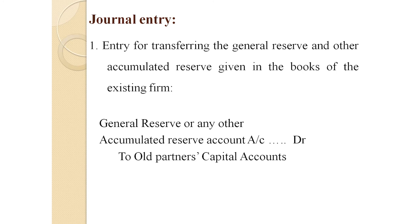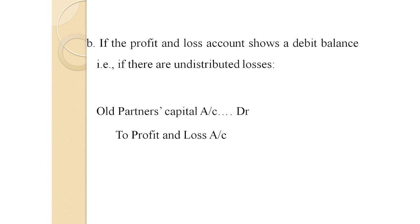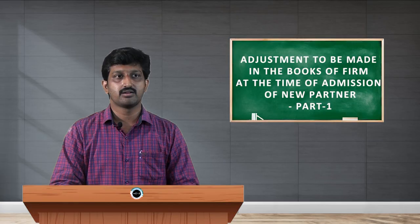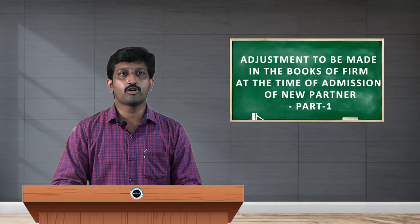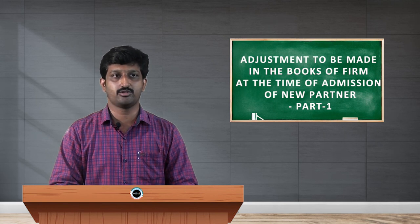The journal entries are as follows. First entry for transferring the general reserve and other accumulated reserves: General Reserve or any other accumulated reserve Account Dr. to Old Partners' Capital Account. Second entry for transferring the profit and loss account balance: if the profit and loss account shows a credit balance (undistributed profits), then Profit and Loss Account Dr. to Old Partners' Capital Account. If the profit and loss account shows a debit balance (undistributed losses), then Old Partners' Capital Account Dr. to Profit and Loss Account.